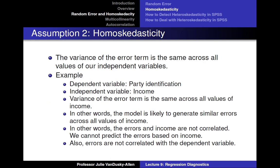This leads us to the second assumption of regression: homoscedasticity. This means that we assume the variance of the error term is the same across all values of our independent variables. To illustrate what it means when the errors in a model are homoscedastic, consider this example. Imagine your dependent variable was party identification and your independent variable was income. If the errors were homoscedastic, the variance of the error term would be the same across all values of income. In other words, the model is likely to generate similar errors across all values of income. Stated another way, we could say that the errors in income are not correlated — we cannot predict the errors based on income.